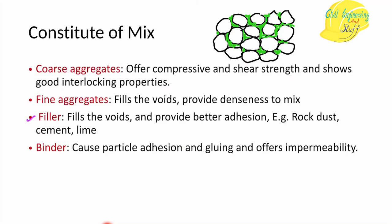Then we have filler material. Filler is added to the bituminous mix to improve the adhesive property and to fill voids that fine aggregates are not sufficient to fill. Conventionally, stone dust, cement, and lime are used as filler materials. The filler occupies spaces left after fine aggregate, and using cement or lime improves the overall adhesive property between aggregates.